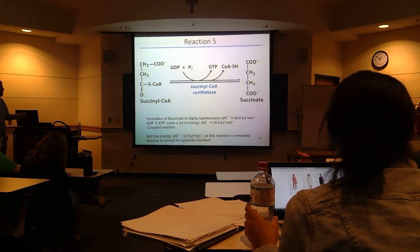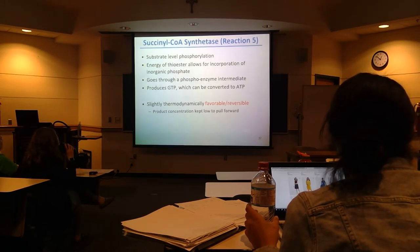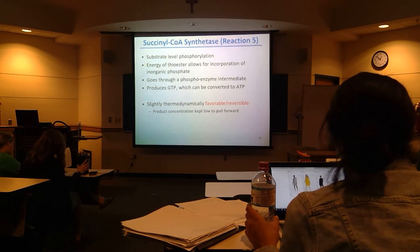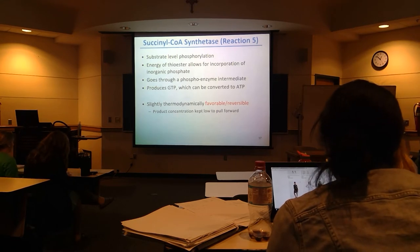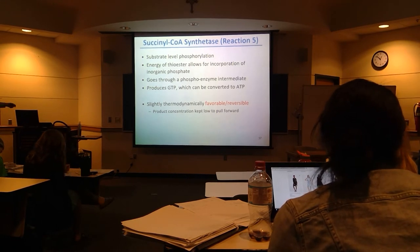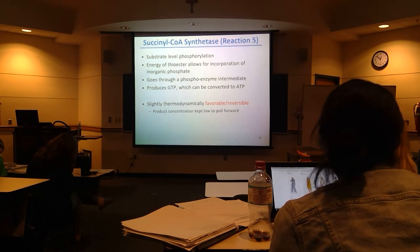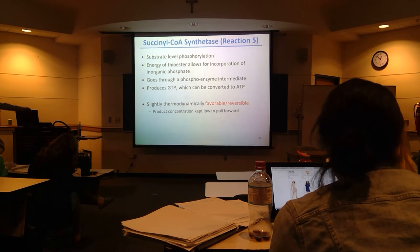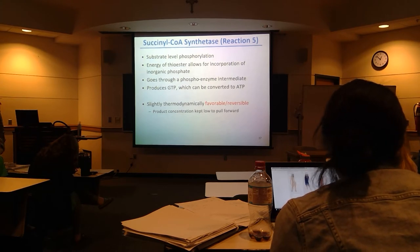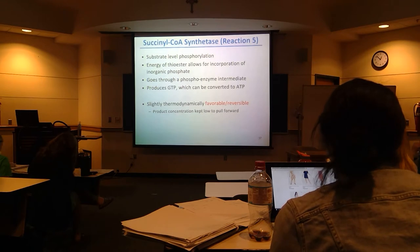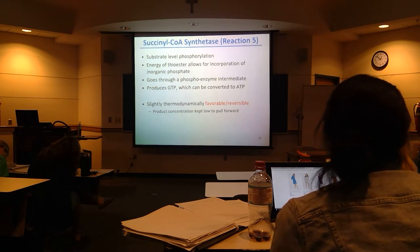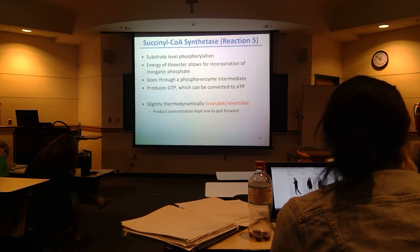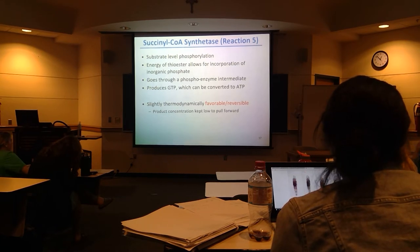The breaking of this CoA to form succinate is very spontaneous — negative 32 kilojoules per mole — and that pays for the formation of the GTP, which is very not spontaneous at plus 30 kilojoules per mole. Because these are coupled, the net free energy is still slightly negative, making this overall a spontaneous reaction. We're taking inorganic phosphate, adding it to guanosine diphosphate to make guanosine triphosphate. This is reversible — the net free energy change is pretty close to zero.